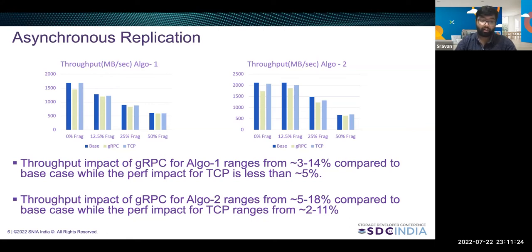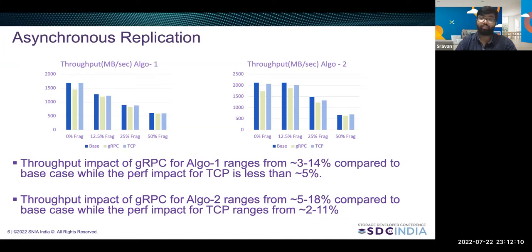First, let's have a look at the throughput numbers in the case of asynchronous replication with various levels of data fragmentation. As you can see from the bar graphs, the throughput speeds for the base case and TCP case are very similar, while for the gRPC case it is slightly lower. In terms of pure numbers, the throughput impact for gRPC for algorithm one ranges from 3 to 14 percent compared to the base case, while the performance impact for TCP is less than 5 percent. For algorithm two, the impact of gRPC ranges from 5 to 18 percent compared to the base case, while the performance impact for TCP ranges from 2 to 11 percent.